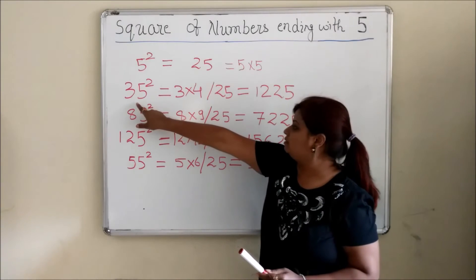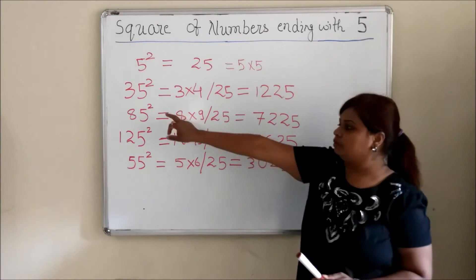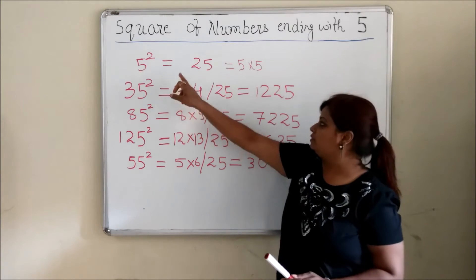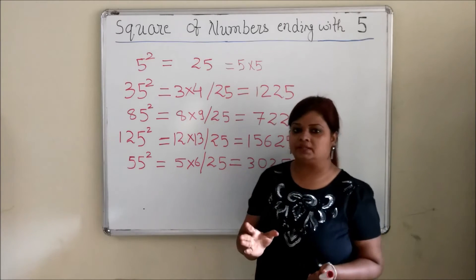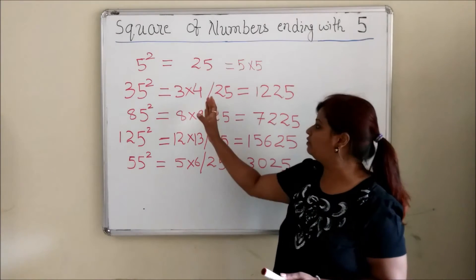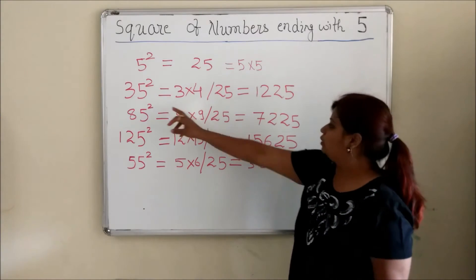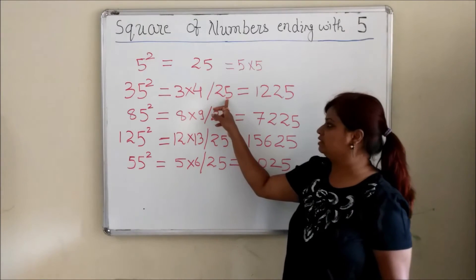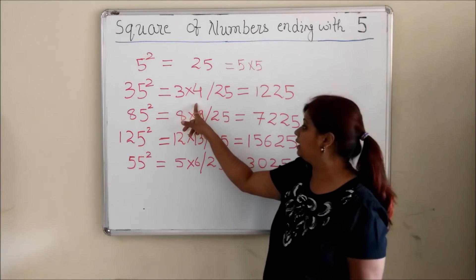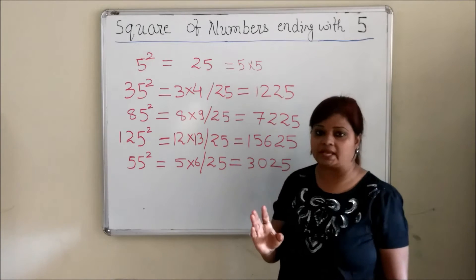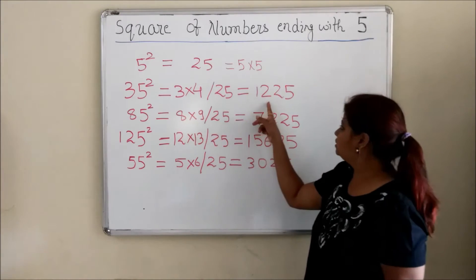Suppose we are taking 35 square. I have taken an example here. So if you see that square of 5 is 25. In Vedic Maths specifically you always divide the method into two parts, left and right. Now 5 square is 25 we are placing here. What 3 has to be multiplied with the next number, next natural number. So 3 is multiplied with 4 and you get 12.